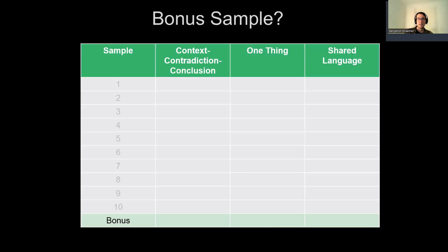That completes the 10 samples we will be scoring today. But remember that line at the bottom of the scorecard for a bonus sample? The bonus sample is what you wrote at the very beginning of the workshop when I asked you to introduce your work to someone you just met at GLEON in three to five sentences. Go back and score it just like you did for these other 10 samples, according to those three criteria. Please pause the video now to give yourself time to score your own writing sample.